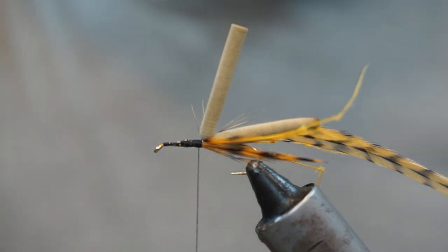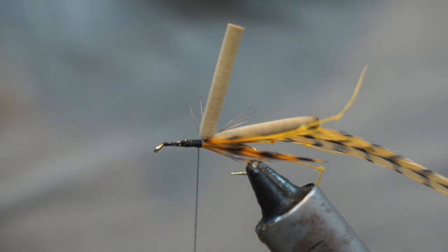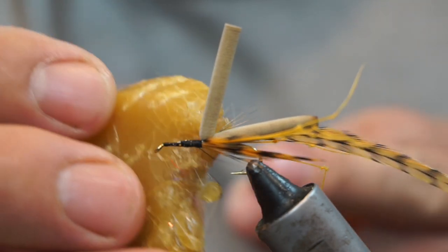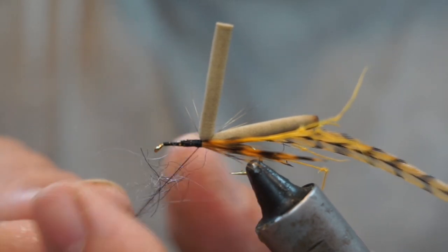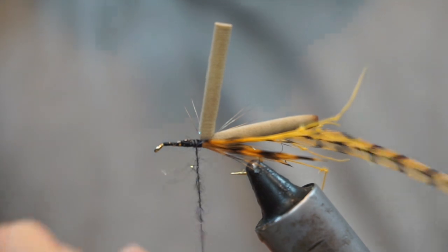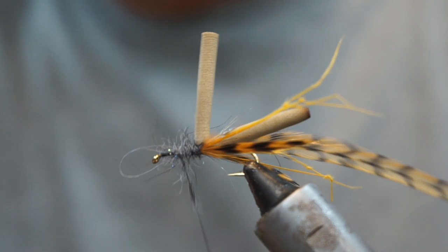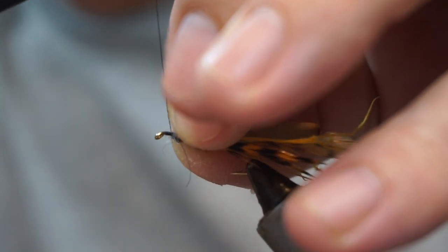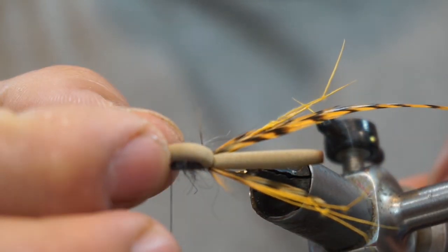Then I want to dub on the body. The body is this flash nymph gray. I'm going to take some of that and my wax, wax my tie-in thread and then apply the dubbing along that. Catch a couple of fibers and that will allow me to spin this up. I'm going to get a turn tight up into the back of the foam, and then I'm going to wrap forward. I'm stopping a bit shy of the eye here because I want to get a couple of turns of hackle onto bare shank and I also want room for this to come across the top and tie in.